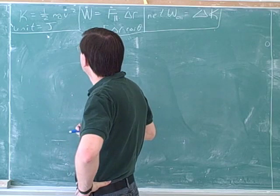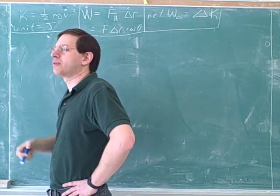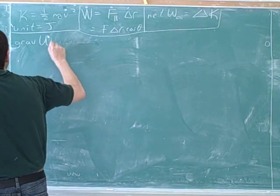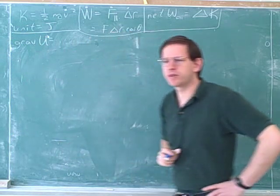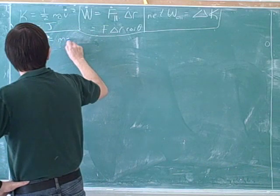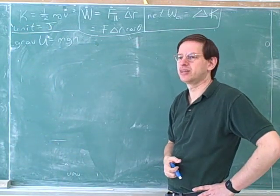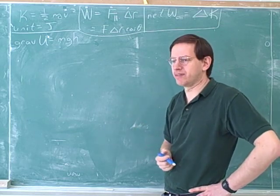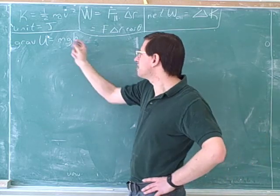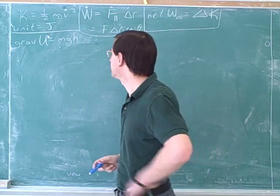There are other types of energy besides kinetic energy. For example, there's gravitational potential energy. Do you remember the formula? MGH. M stands for mass, G is the acceleration due to gravity — 9.8 meters per second squared — and H is the height. This is the vertical height only — only the vertical component of the height.